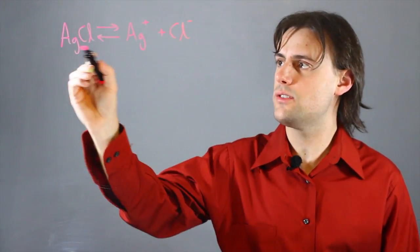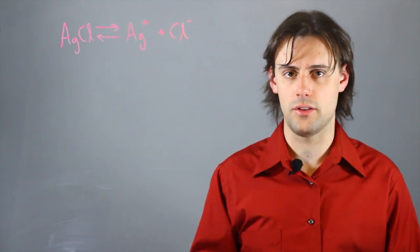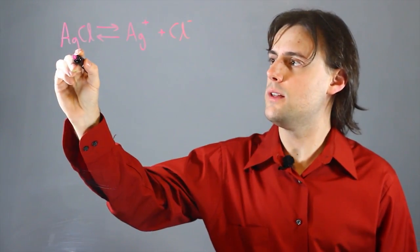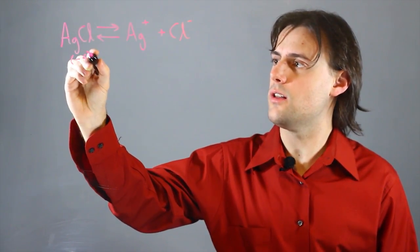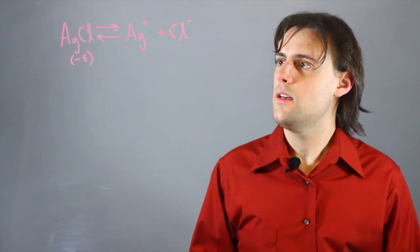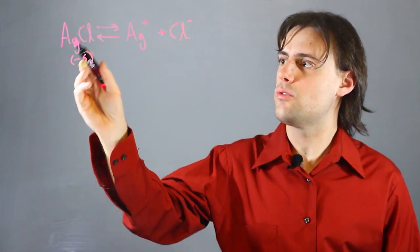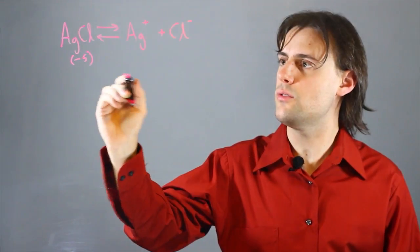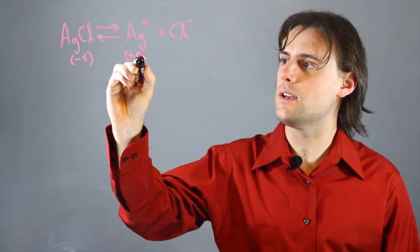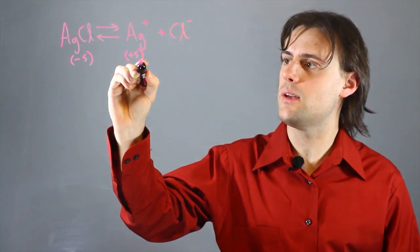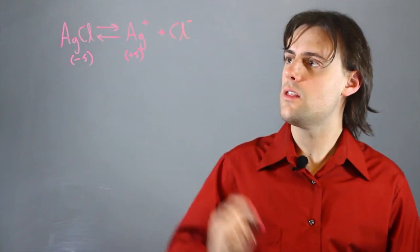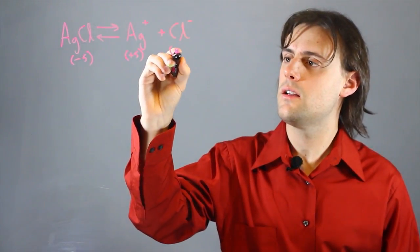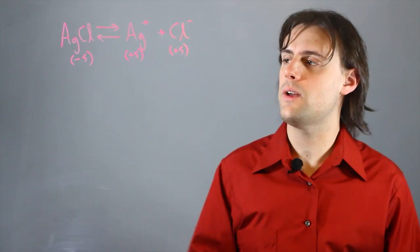As this compound is dissolving in the solution of water, we're going to be losing some of that solid. And likewise, as we're losing this compound in the solution, we're increasing at the same rate the amount of silver atoms and the amount of chlorine atoms.